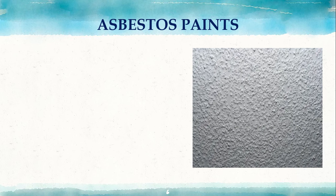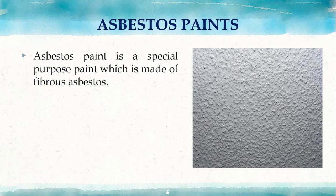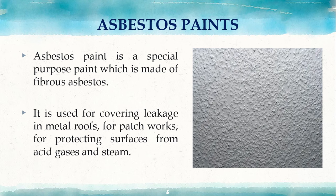The second type is asbestos paint. Asbestos paint is a special-purpose paint made up of fibrous asbestos. It is used for covering leakage in metal roofs, patchworks, and protecting surfaces from acid gases and steam. Rusting of pipes, flashings, and gutters can also be prevented using asbestos paint coating.